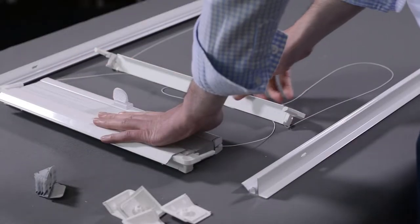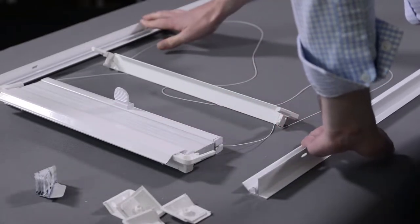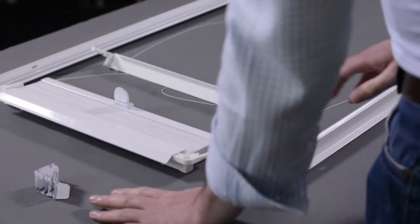So we've got the pleated blind at the top and bottom frame, the two side frames, brackets and cover caps.